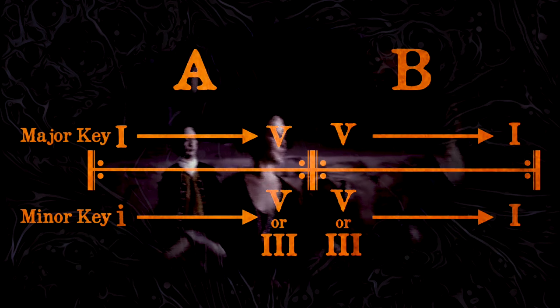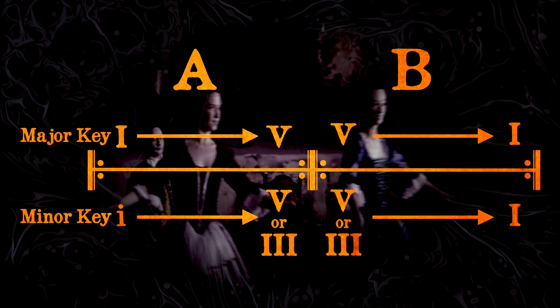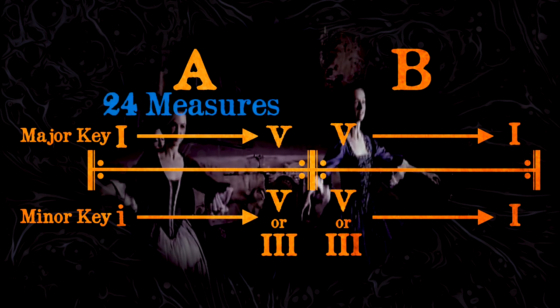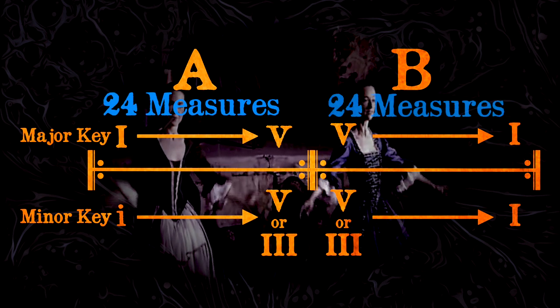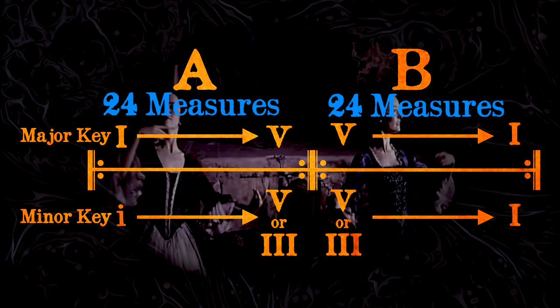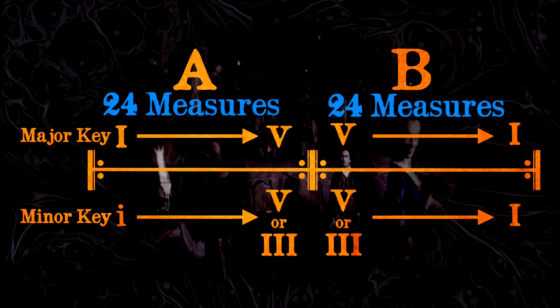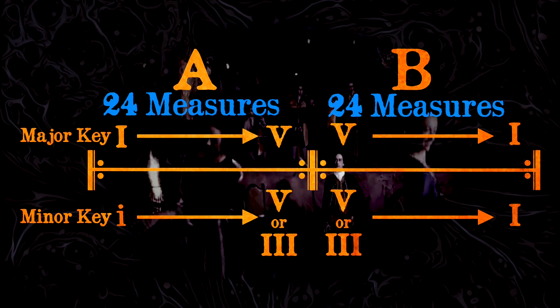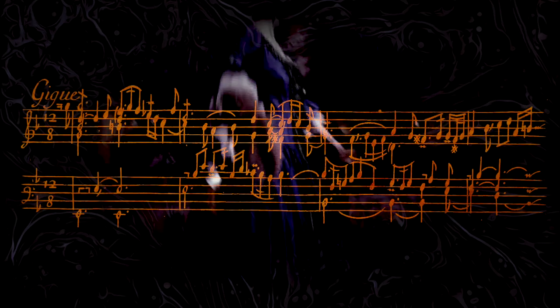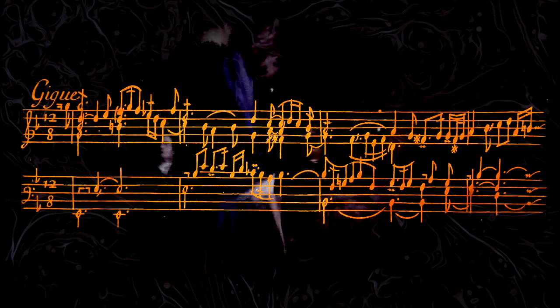One aspect is that Jigs often have A and B sections of equal length, like the Alamand. Another trait found often in the A section, but also the B section of a Jig, is the beloved practice among many Baroque Jigs of employing contrapuntal imitation.